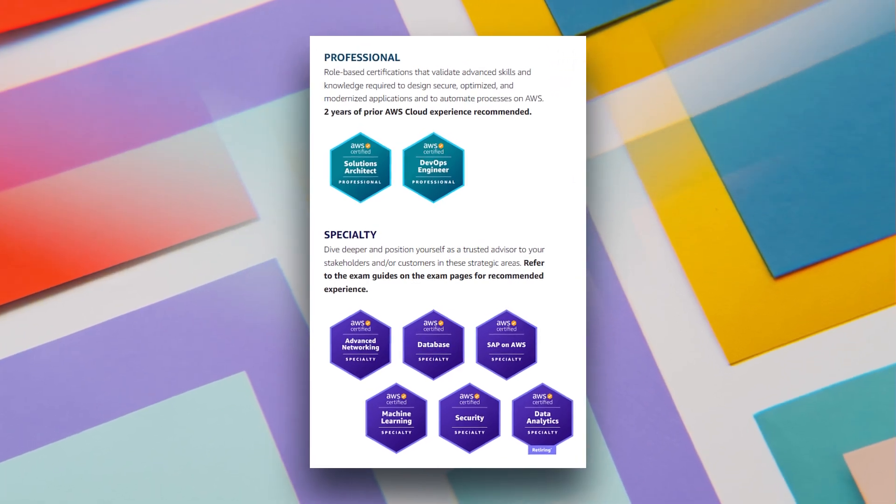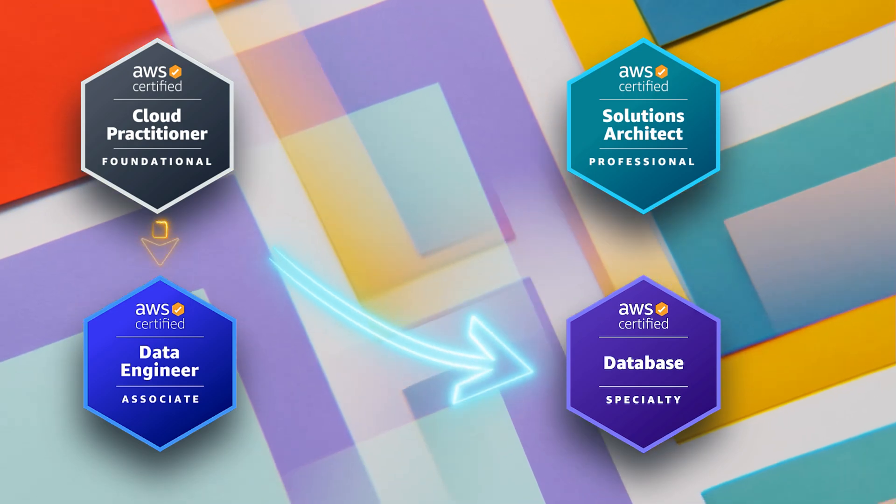Once you clear the Cloud Practitioner exam, move on to the AWS Data Engineering Associate — a newer certification that gives you in-depth understanding of data engineering workloads and services on AWS, covering all the services discussed in part one. After achieving the associate level, you have two choices: go for the AWS Solutions Architect Professional if you want to move into architecture or senior-level roles, or pursue the AWS Database Specialty certification to become an expert in database technologies available on AWS.